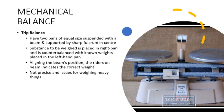The trip balance is another type of balance which has two pans, both equal in size and suspended with a beam. These pans and beam are supported by a sharp fulcrum present in the center. When an object is to be weighed, it is first placed in the right pan, and on the other pan the known weights are placed.